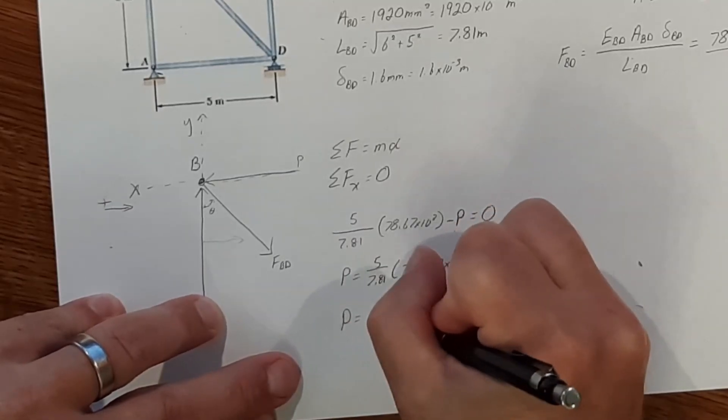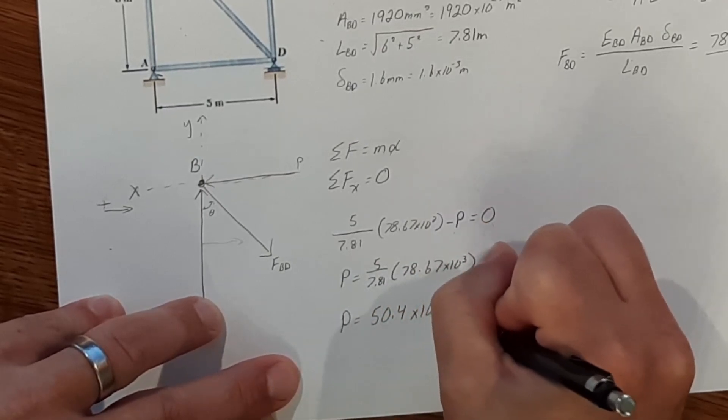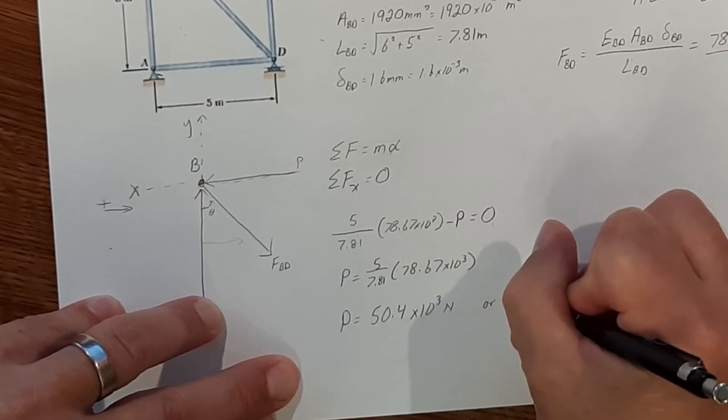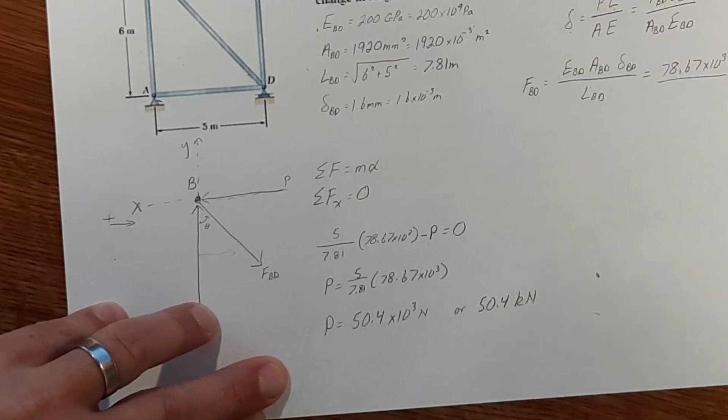So that's going to give us 50.4 times 10 to the third newtons, or 50.4 kilonewtons. So there you have it.